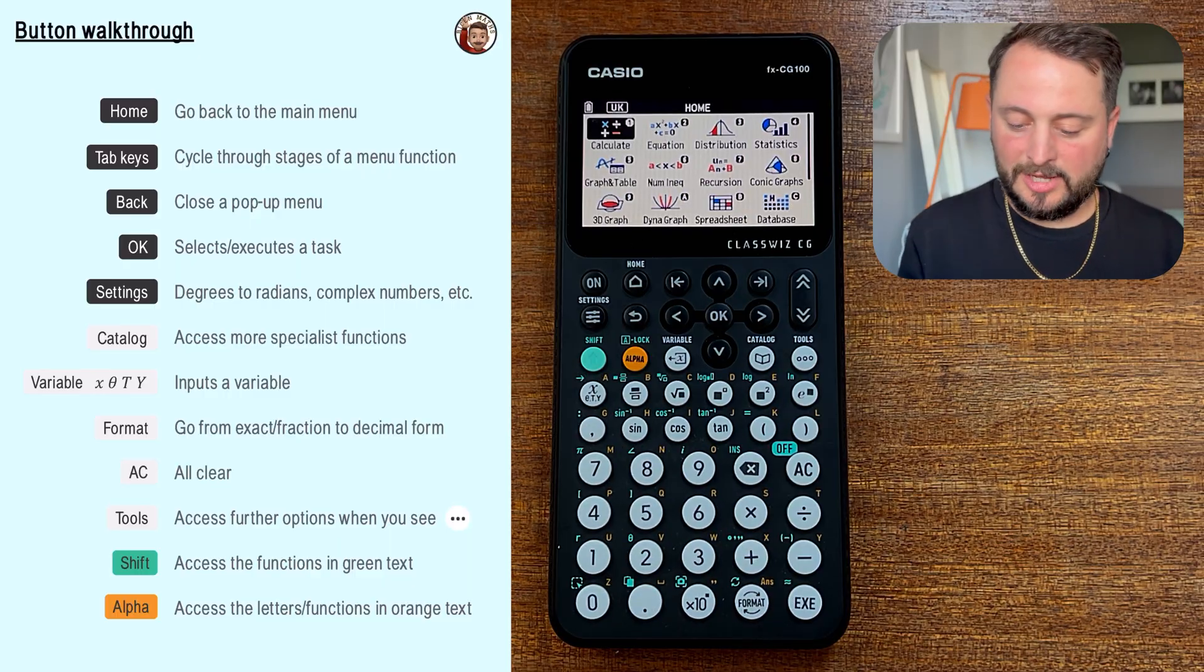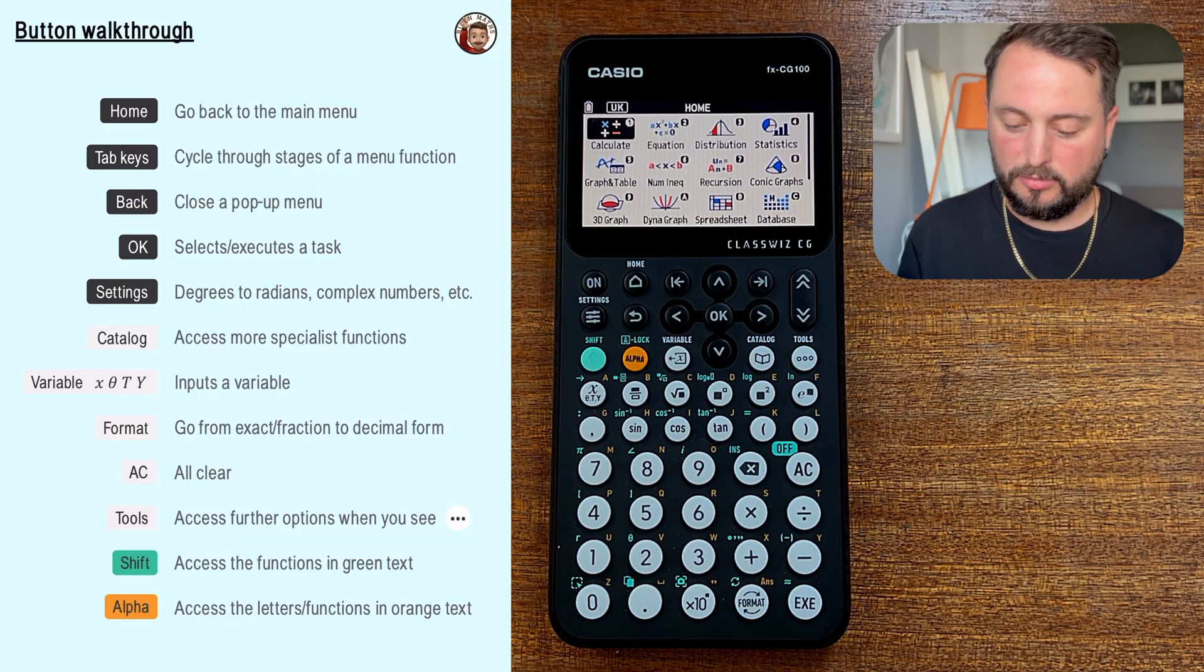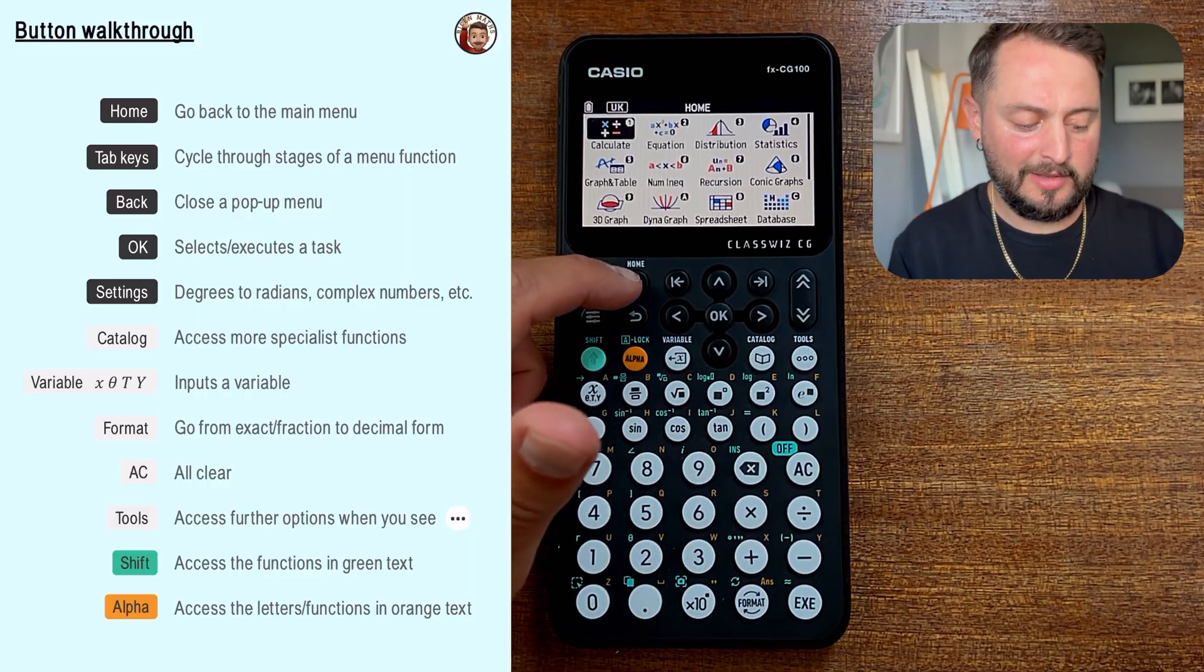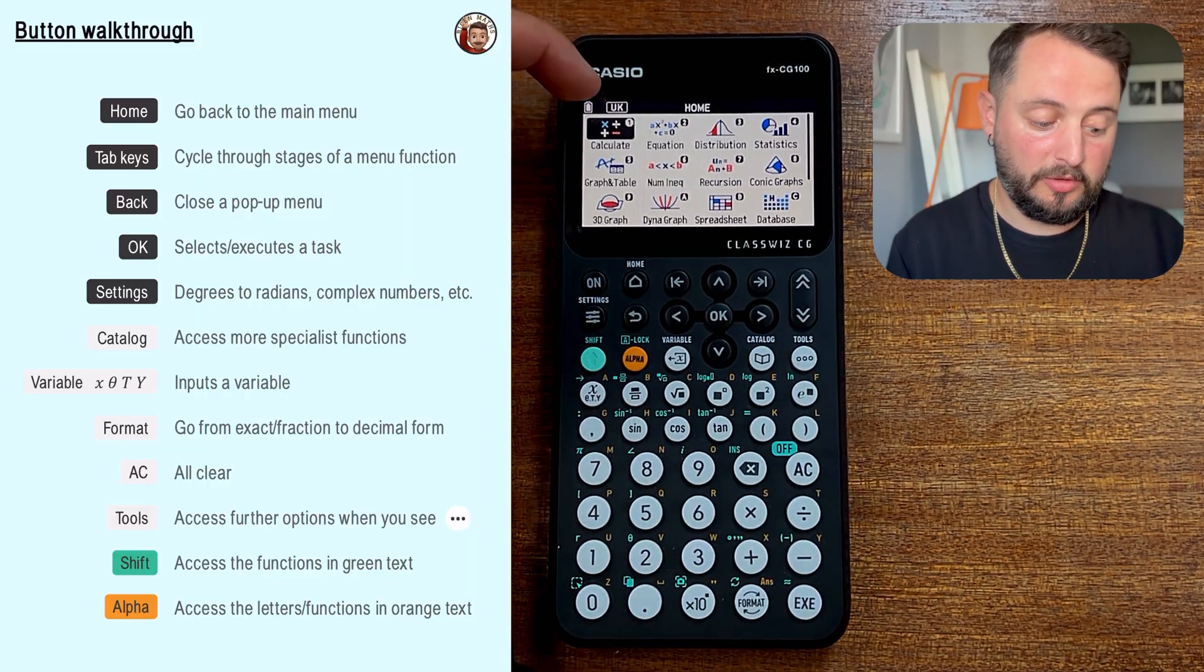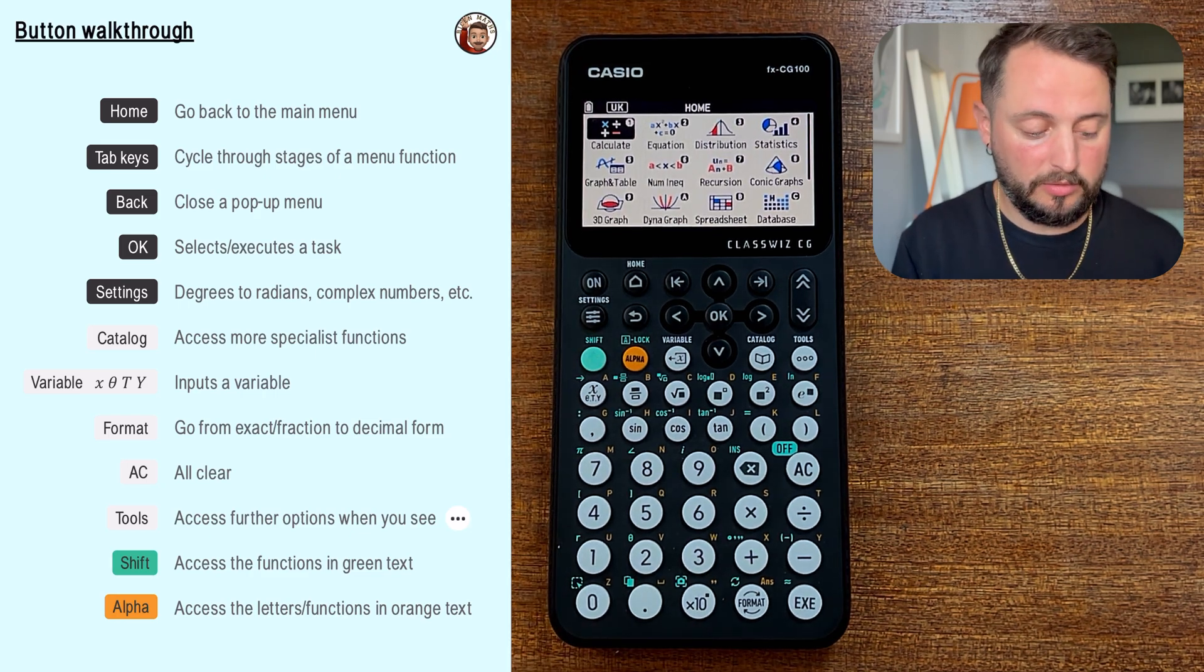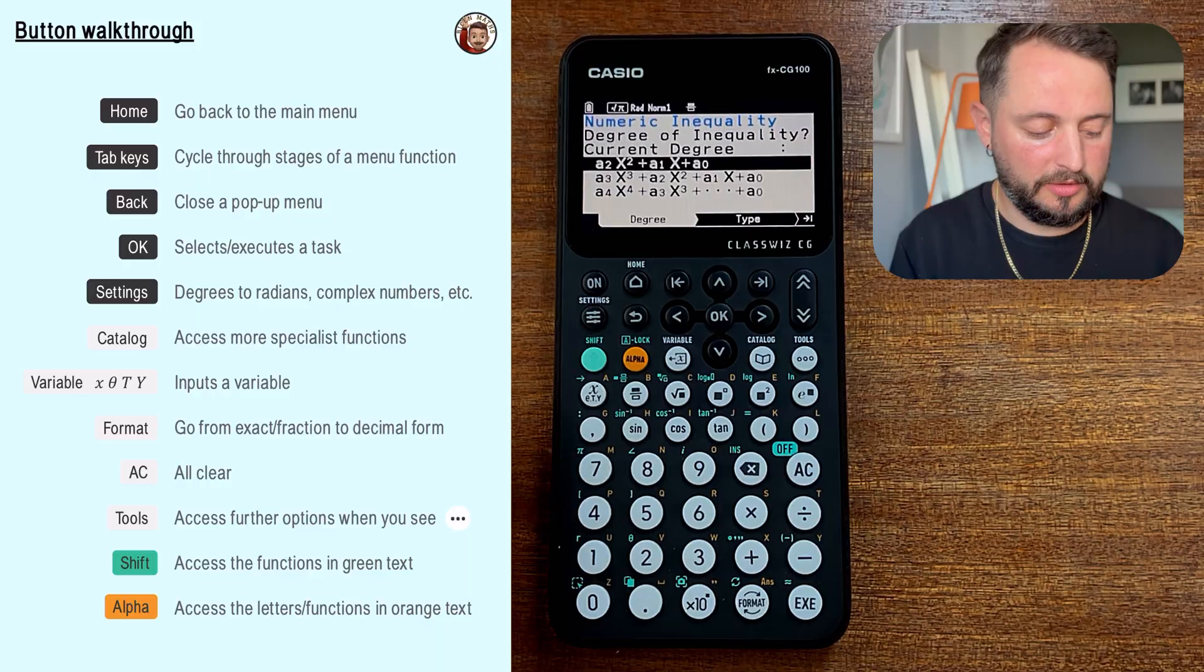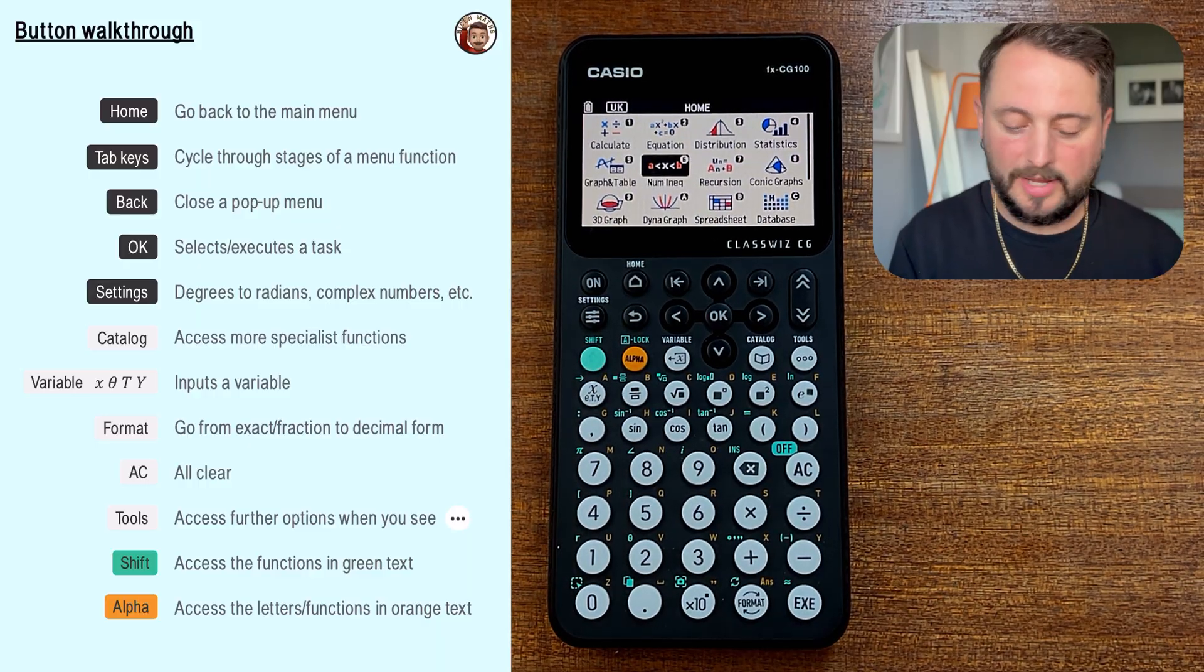So what I'm going to do now is talk to you about some of these different buttons that we've got, what they do and how best to use them. So the first one that we have is, of course, the home button, which is the one with this little house symbol here. And you can obviously see we are currently on the home screen and you can also see that we're in the UK curriculum mode as well. So wherever you are in the calculator, let's say I was in number inequality, if you want to go back to that screen, hit the home and it will take you straight back to that place.